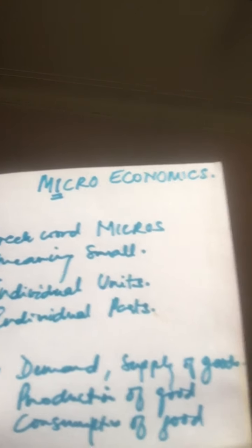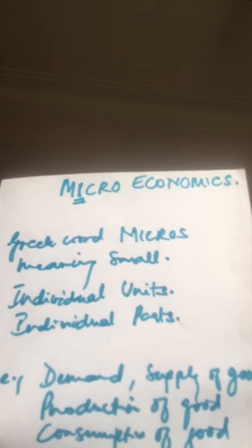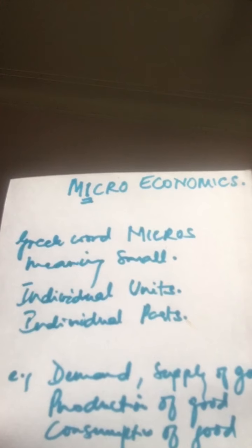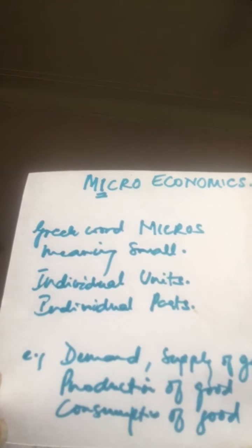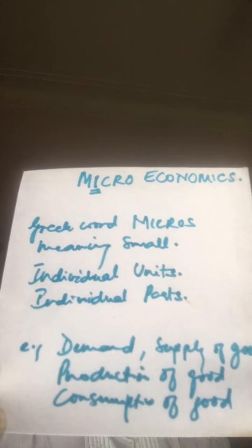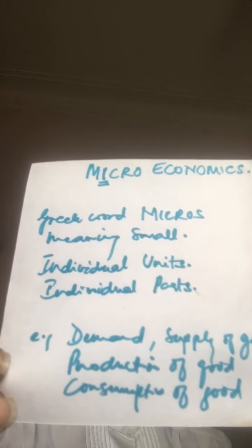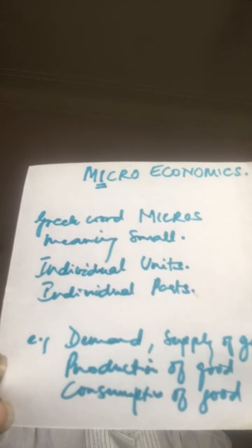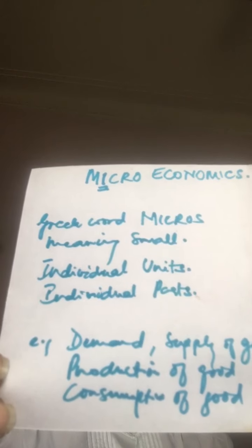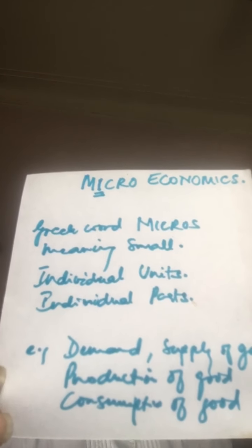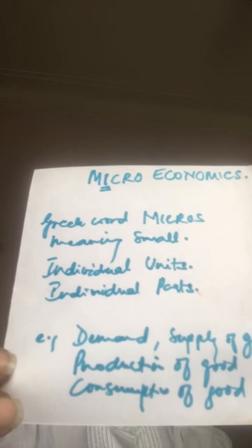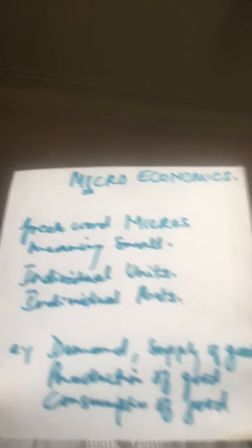Microeconomics studies the behavior of small economic units of an economy — for example, individual consumers and producers. It talks about product pricing and factor pricing, such as rent and wages. We also study the theory of demand, theory of production, theory of cost, and revenue under microeconomics. Welfare economics also comes under its scope.